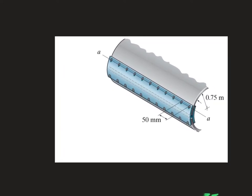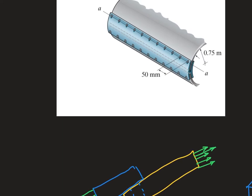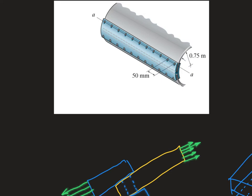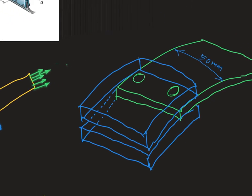Now let's proceed to part B, where you are asked to compute the hoop stresses in the cover plate region. Before working out the numbers, pause the video and guess whether the hoop stress there will be larger or smaller than at the boiler plate. The best way to solve this is to draw the free body diagram — taking a small chunk of mass from this region.